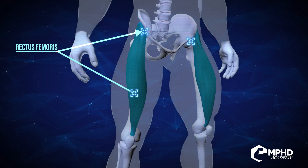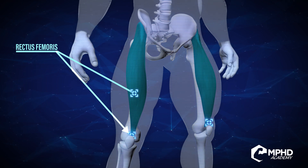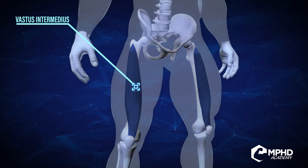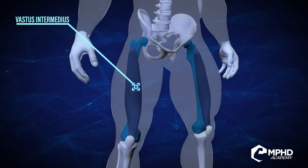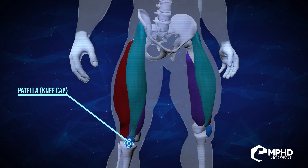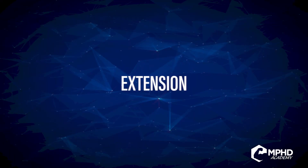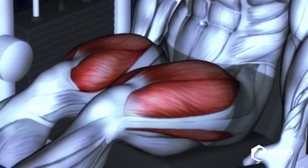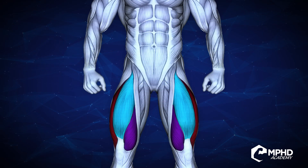Because the rectus femoris crosses the hip joint, it acts on both the hip and the knee. The vastus intermedius, the muscle that lies underneath the other quads, originates on the mid upper femur. All of the quadriceps — which is why they're considered one muscle — insert into the kneecap via the quadriceps tendon.